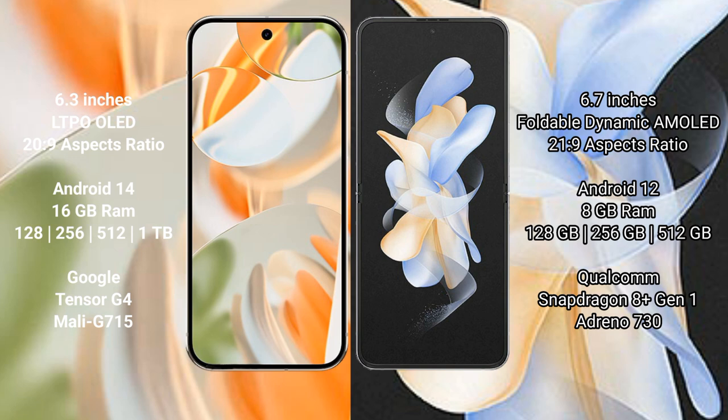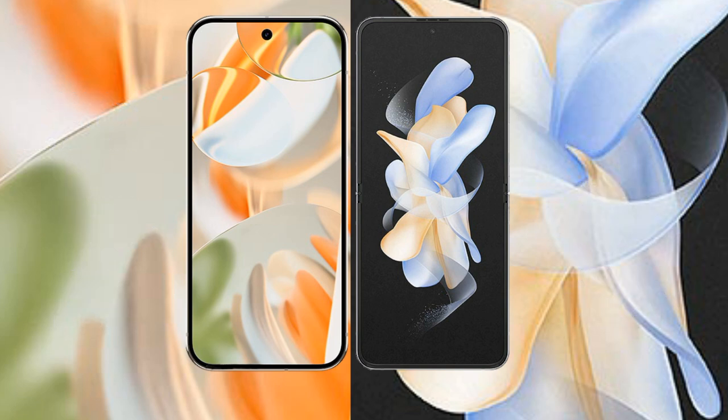Google Pixel 9 Pro comes with 16GB RAM and 128GB, 256GB, 512GB, or 1TB internal storage, powered by the Google Tensor G4 processor with Adreno 730 GPU. Samsung Galaxy Z Flip 4 comes with 8GB RAM and 256GB or 512GB internal storage, powered by the Qualcomm Snapdragon 8 Gen 1 processor with Adreno 730 GPU.